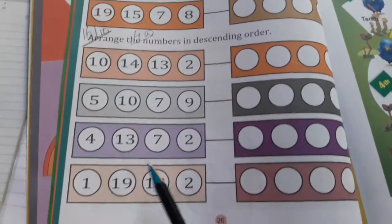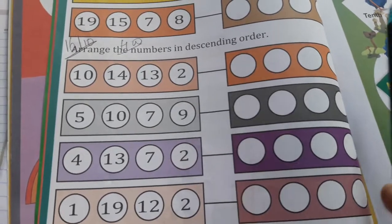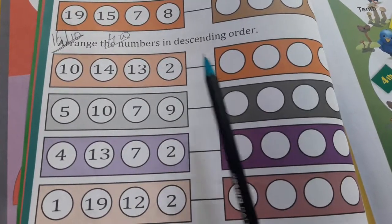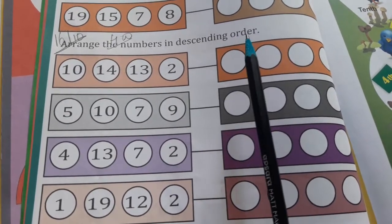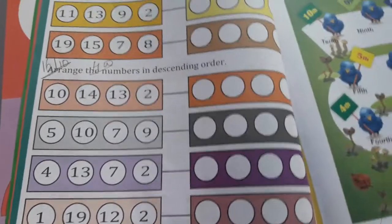Aap ko yeh homework karna hai. Yaha pe kuch numbers diye rakhe hain. Aap ko descending order se number likhna hai. Jo sabse bada number hai woh likhenge, aise karke big number se small number pe aayenge. Thik hai, sab ko samaj me aya na.